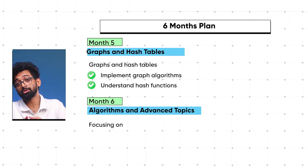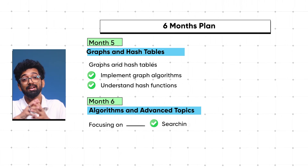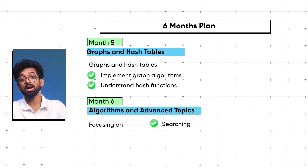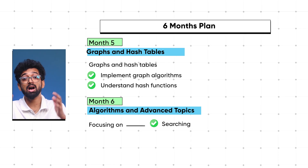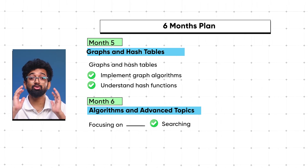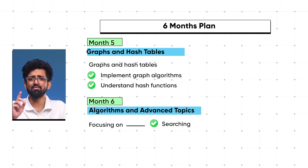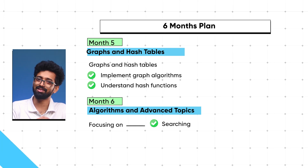In month six, focus on sorting, searching, dynamic programming, greedy algorithms, and backtracking. Spend about three weeks on algorithms and one week for review and practice. There are some common difficulties you might face — let me tell you how to avoid them.